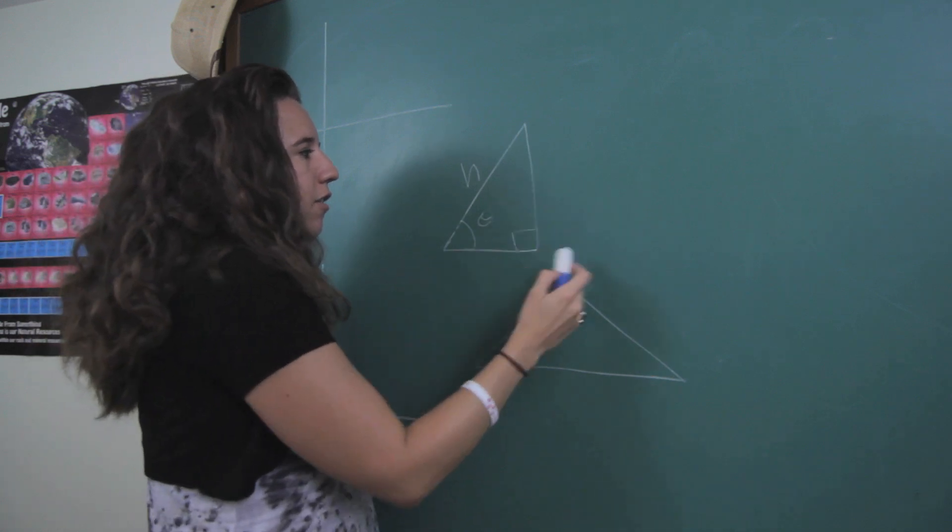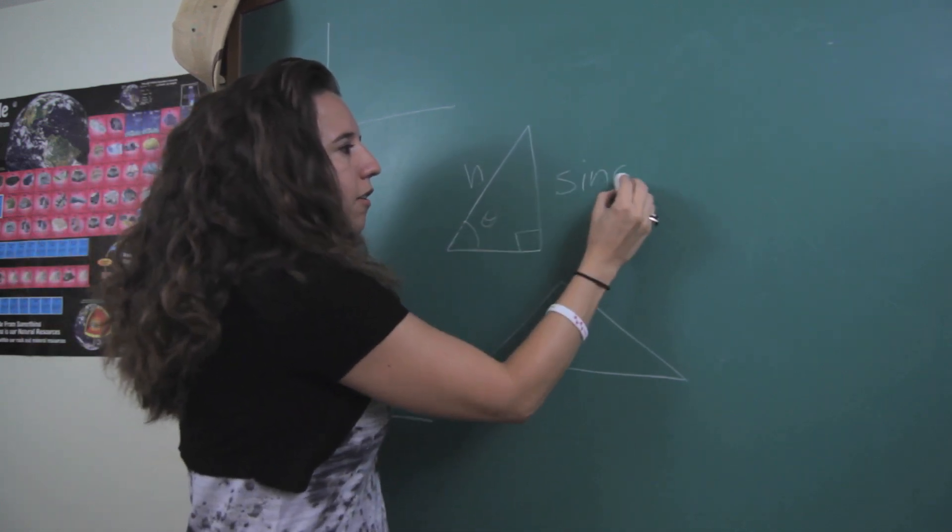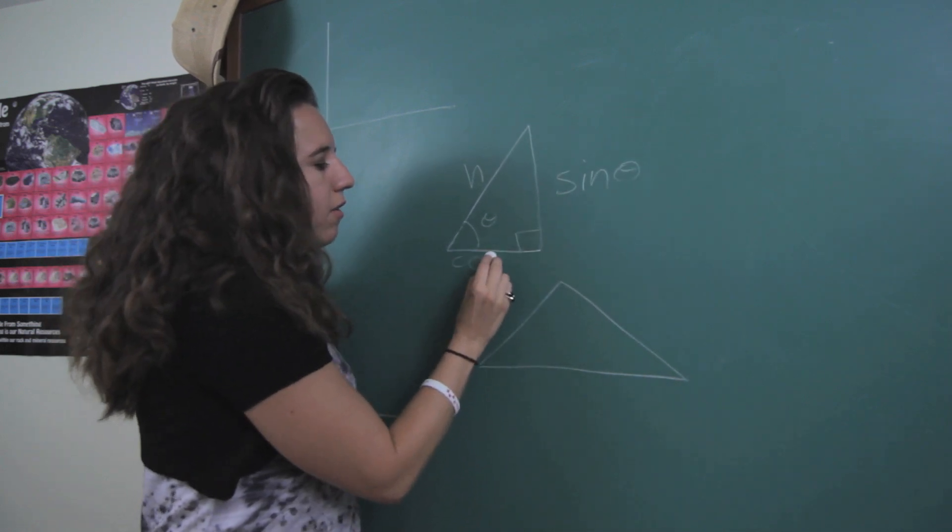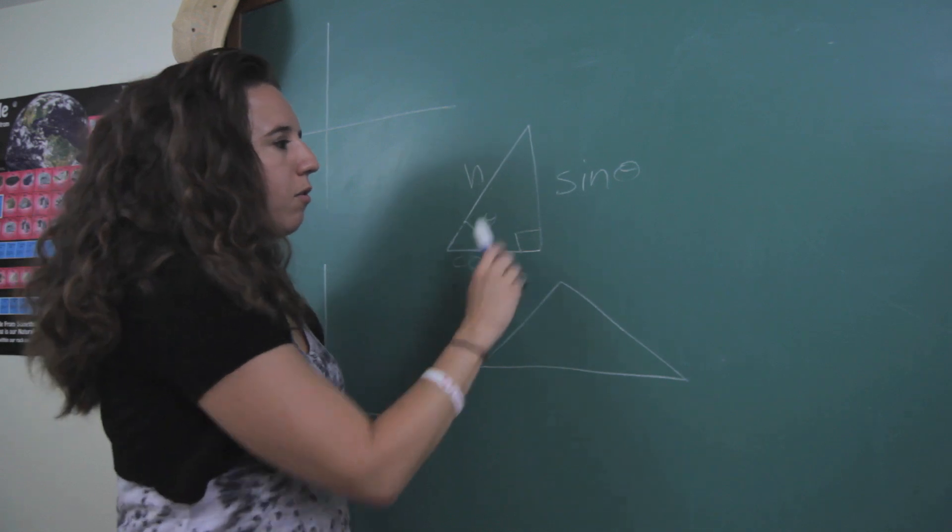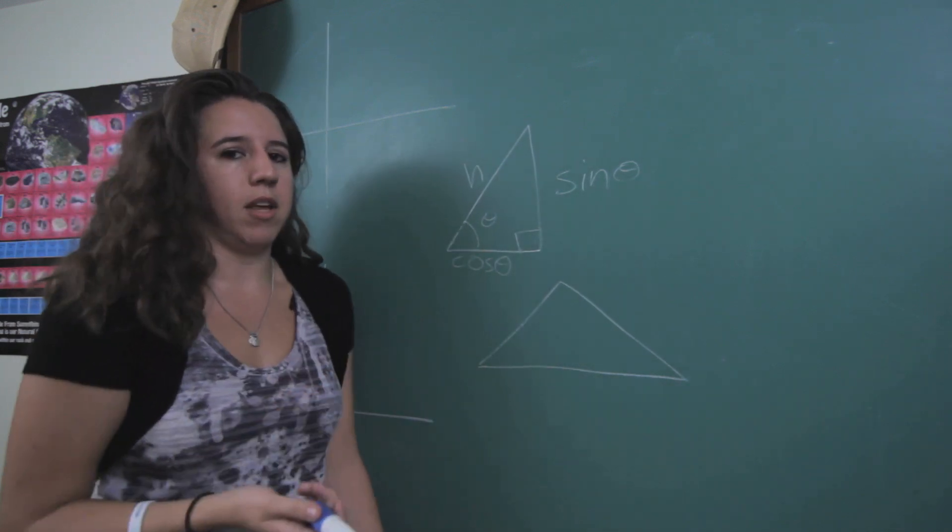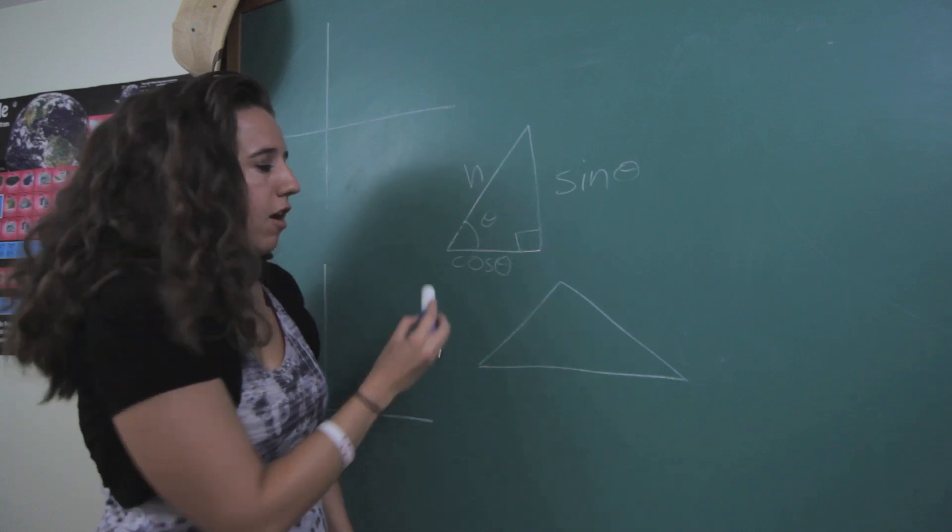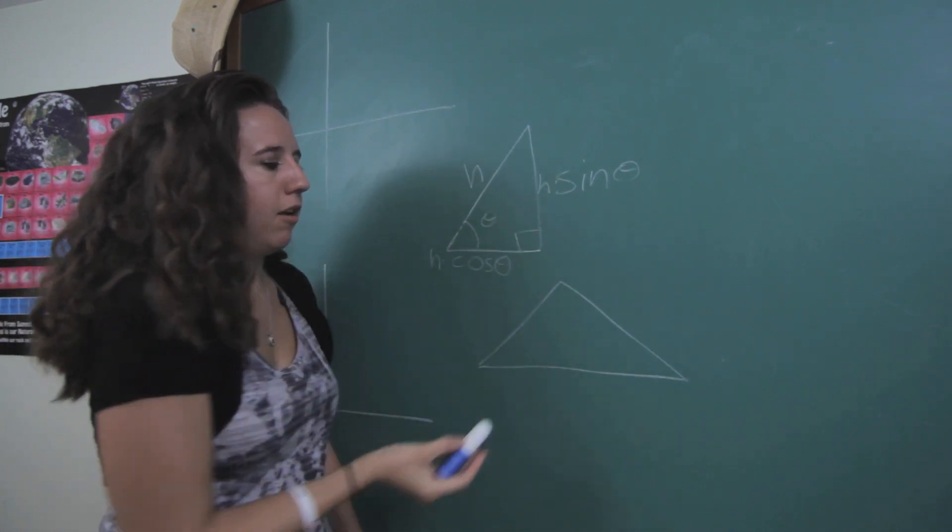So this side over here is going to be the sine of that Greek letter theta. And this side over here is going to be the cosine of that Greek letter theta. Now these will be true if the hypotenuse is one, but the hypotenuse could be any number. So just to get your scaling right you're actually going to multiply both of these by H.